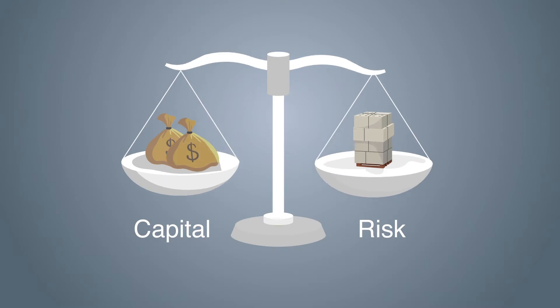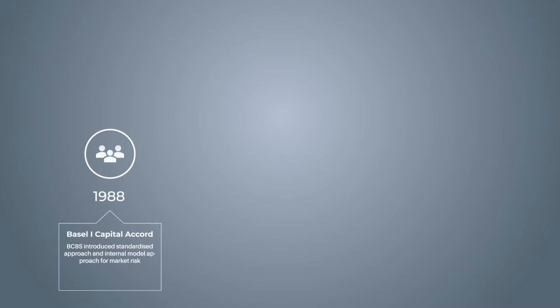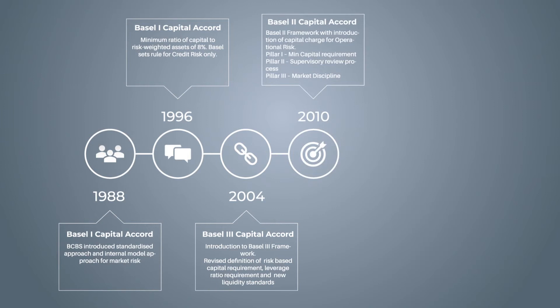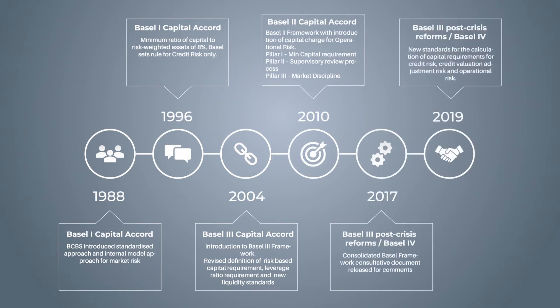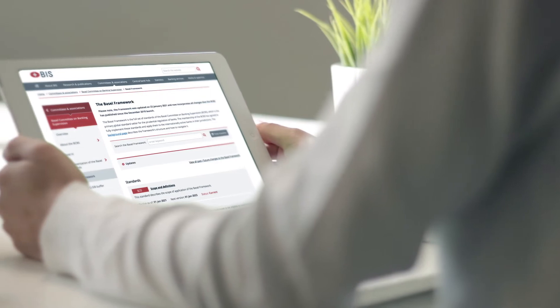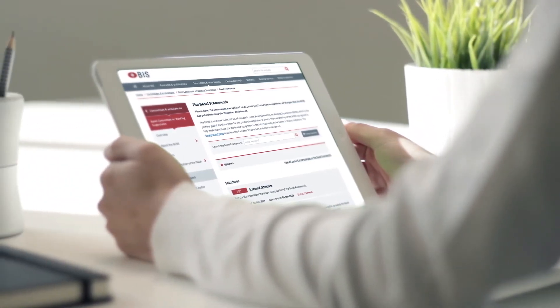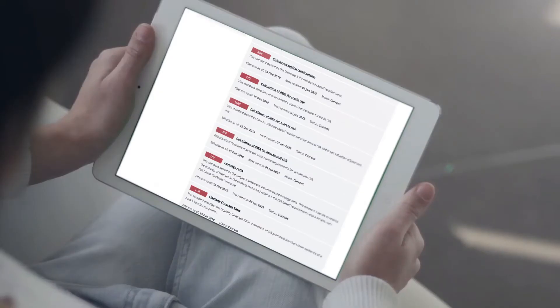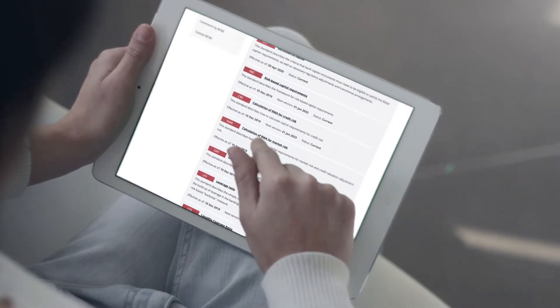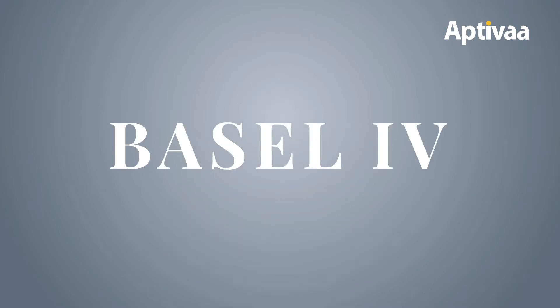Almost 30 years after the publication of the first consultation paper on Basel 1, the BCBS has now finalized its reforms to banking supervision capital requirements following the financial crisis. The finalized reforms, published in December 2017, together with earlier publications that revise the calculation of risk-weighted assets — including the updated market risk framework published in 2016 — are collectively referred to as Basel 4 by the industry.